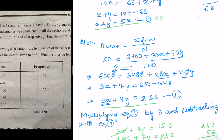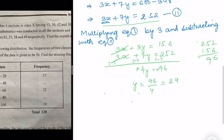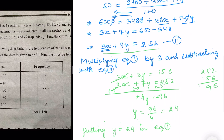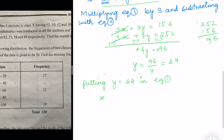Substituting y = 24 into Equation 1: x + 24 = 52, so x = 52 − 24 = 28.